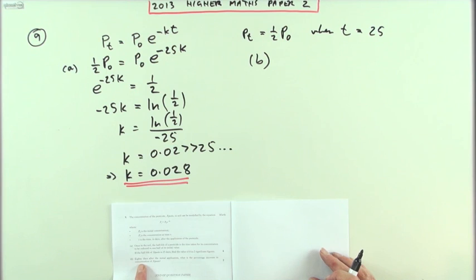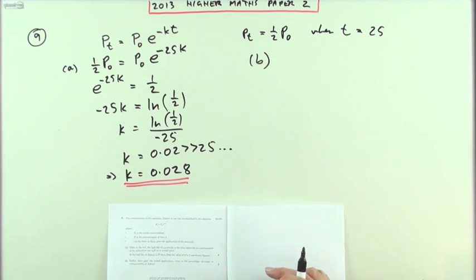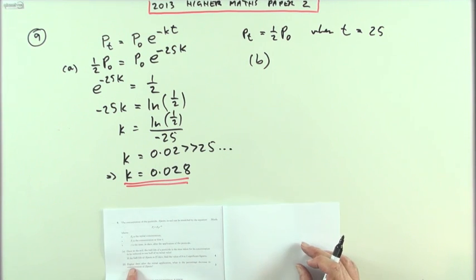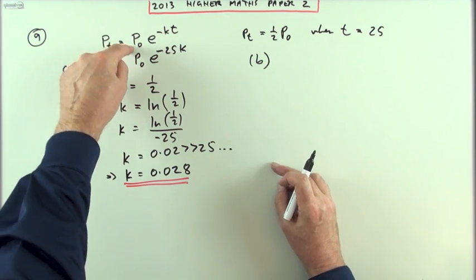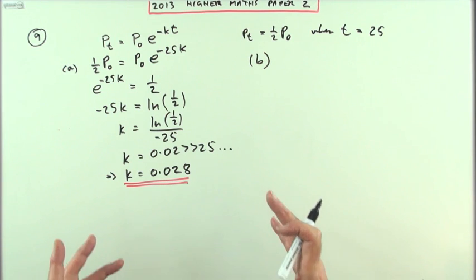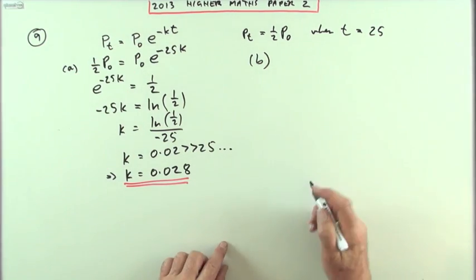Part B then. 80 days after the initial application, what percentage decrease will there be in that concentration? What will be the percentage decrease in p if t equals 80? Well, again, you don't need to know the initial value because it's not asking for the actual amount. It's just a relative fraction you're looking for. How much of p0 is left?